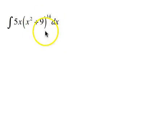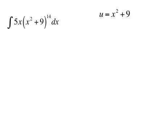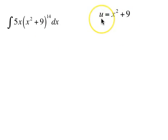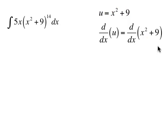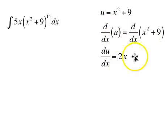We are going to identify u, which in this case is going to be x squared plus 9. Then taking the derivative with respect to x of u and the derivative with respect to x of x squared plus 9, we get du/dx equals 2x.